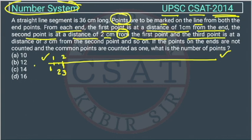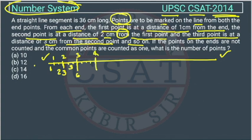Similarly, the third point is at a distance of 3 centimeters from the second point, so the total becomes 6. This gives us cumulative distances of 1, 3, 6. The fourth point is at distance 4, so the total becomes 10.